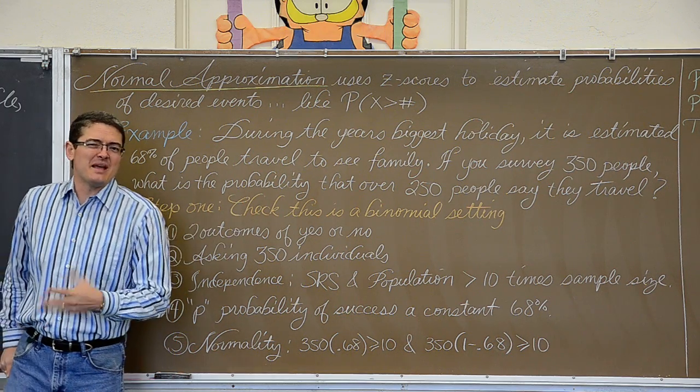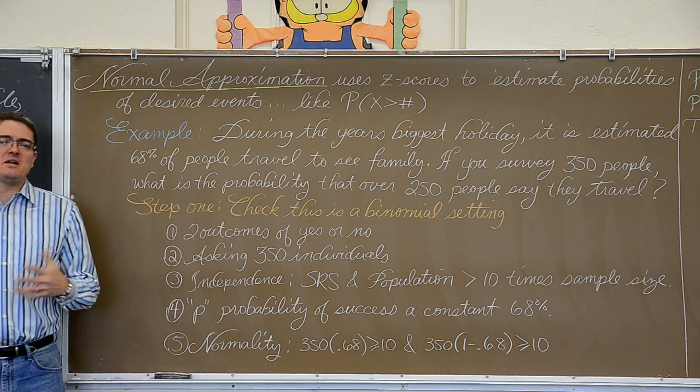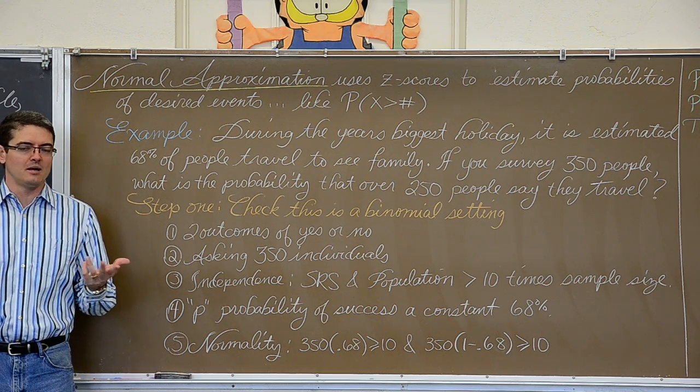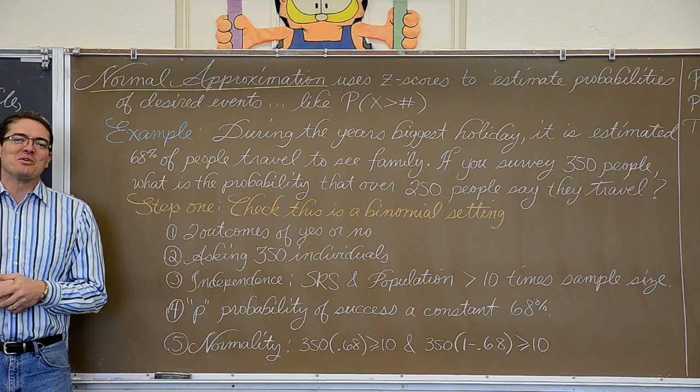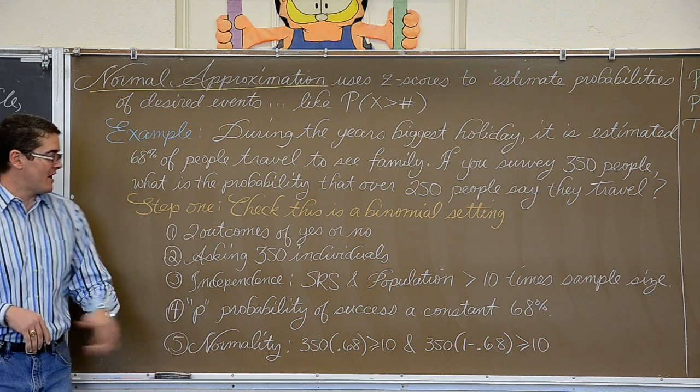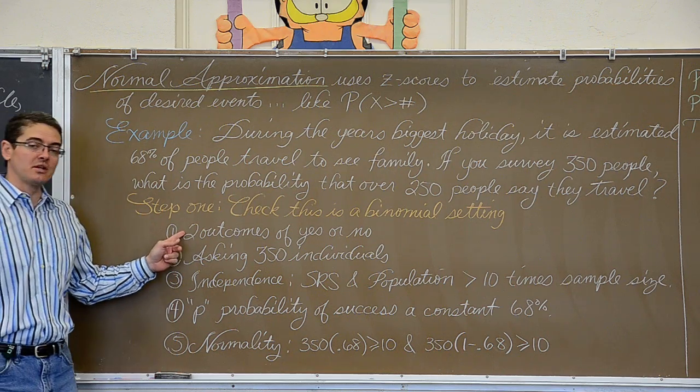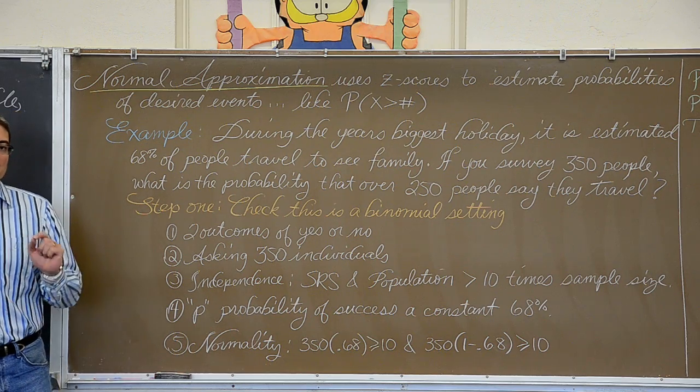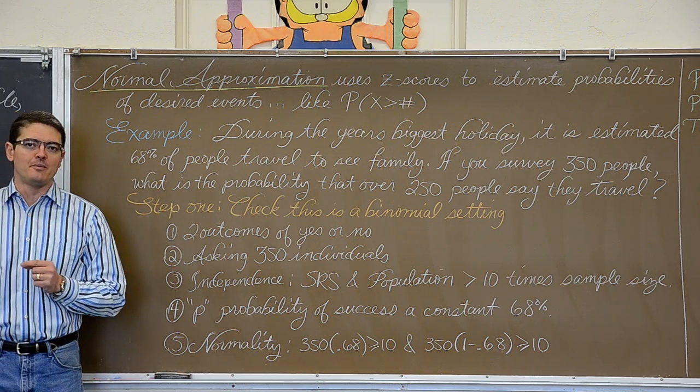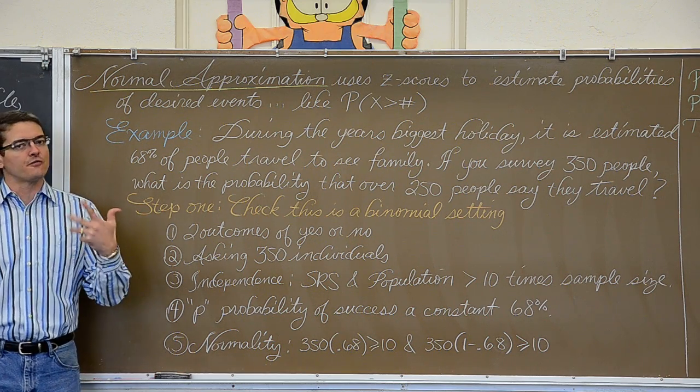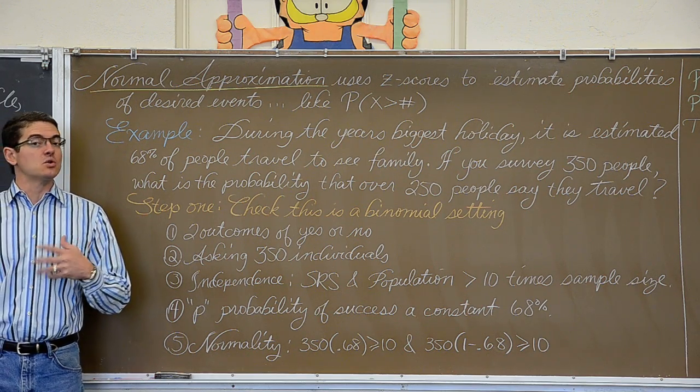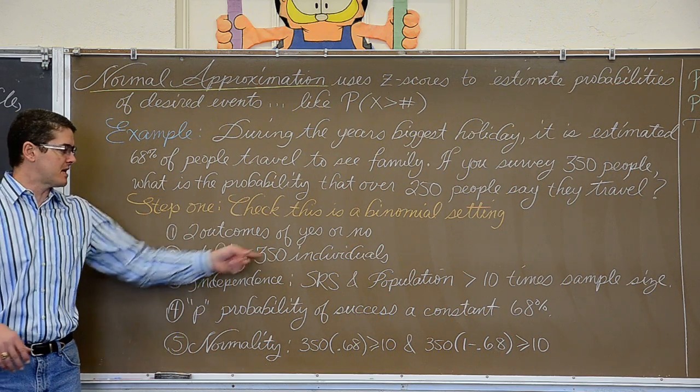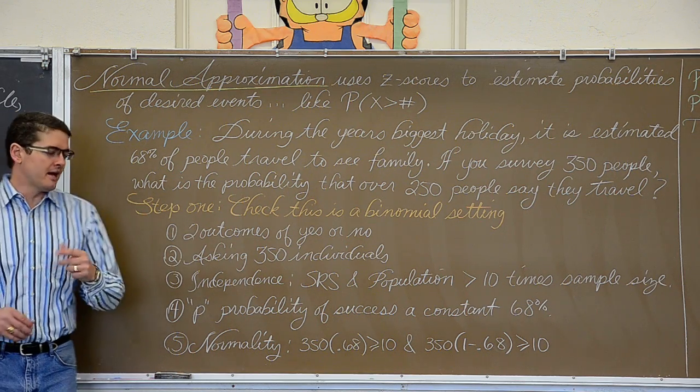Well, step one is to make sure that it is even a binomial setting. Just because it is a yes-no answer does not mean there are two outcomes for each trial. It does not mean that you are automatically into a binomial setting. You have four checks for that. Make sure there are only two outcomes. Make sure that you are asking a set number of observations. We are only going to ask 350 people. We are not going to keep going until we get our first yes. We are not going to keep going until 200 people say yes. We are going to ask a set number of people, 350, and so n is fixed.